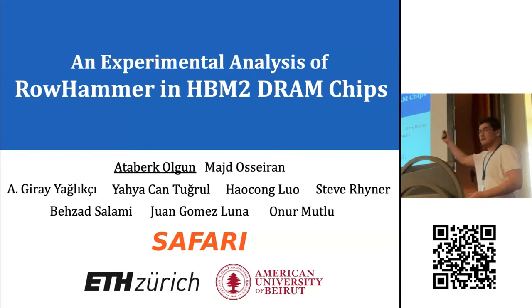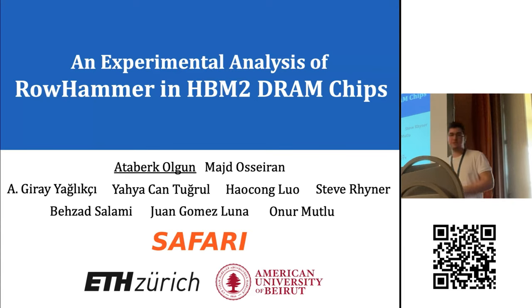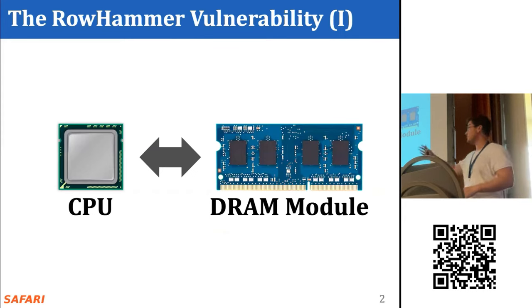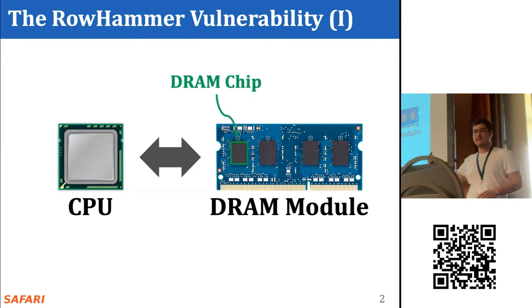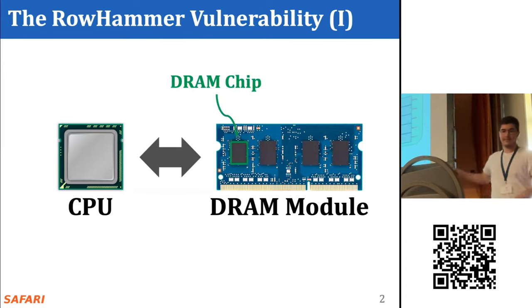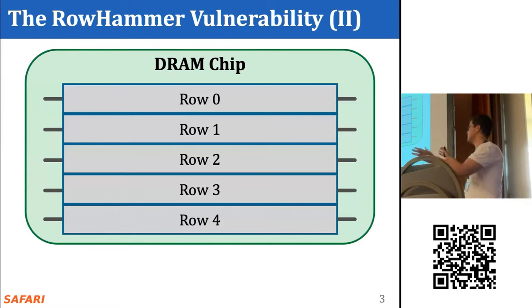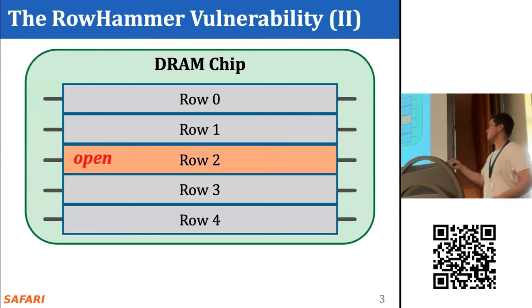I'll present our work: an experimental analysis of rowhammer in HBM2 DRAM chips. Let me first explain the rowhammer vulnerability. This is a typical DRAM-based system with a CPU and a DRAM module. In this simplified DRAM chip containing many DRAM rows, to access data in a row — for example row 2 — the memory controller must first open this row.